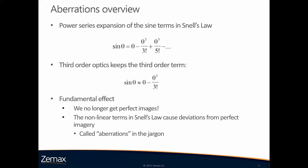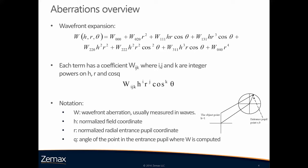When we are talking about third-order aberration, it means that we are keeping the third-order term in the sine term in Snell's law. This non-linear term will cause deviation from the perfect wavefront — these deviations are the aberrations. The wavefront expansion expression defines each aberration, and each term is a specific aberration that can be recognized in OpticStudio with different features. When we talk about a wavefront in OpticStudio, we are always talking about wavefront difference — the difference between the perfect sphere and your current wavefront in your system.